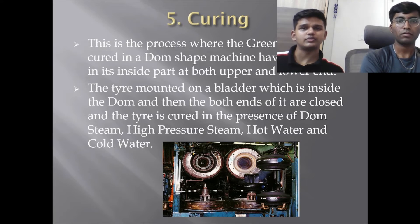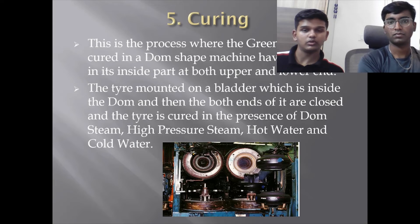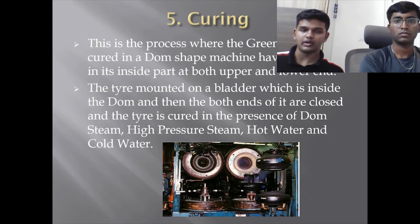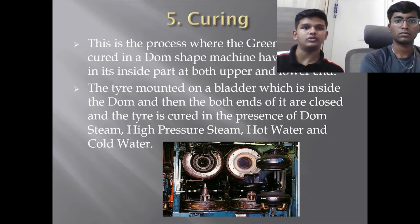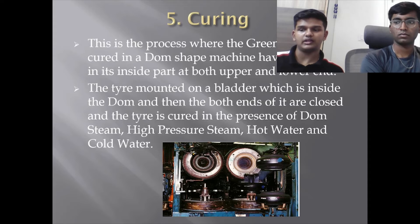Curing is the process where the green tyre is cured in a dome-shaped machine having a mold at both the upper and lower ends. The tyre is mounted on a bladder inside the dome, then both ends are closed. The tyre is cured in the presence of dome steam, high-pressure steam, hot water, and cold water. This curing process is also called vulcanization.